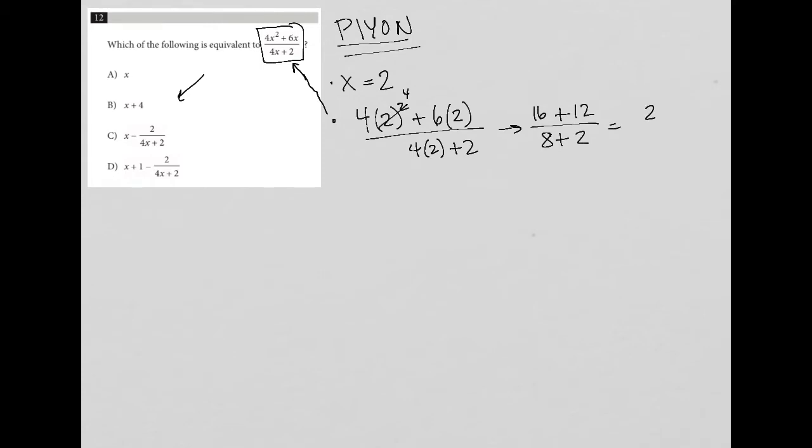So then I have 28 divided by 10, which can be reduced to 14 over 5. Okay, so there's my solution when I plug in my own number 2.